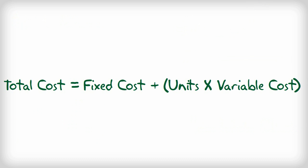This is the cost formula — it is a simple algebraic equation: total cost equals fixed costs plus units produced times the variable cost per unit.